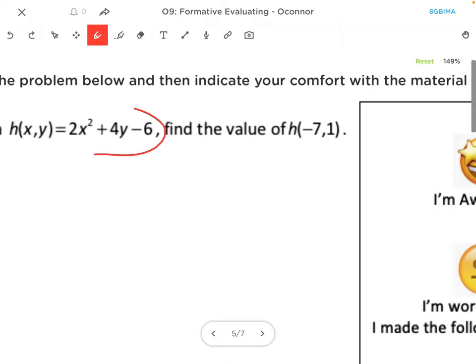Then we're going to evaluate the right side of this equation. So I'm going to do 2 times negative 7 quantity squared, that's this part, plus 4 times 1 because y is 1, and then minus 6.